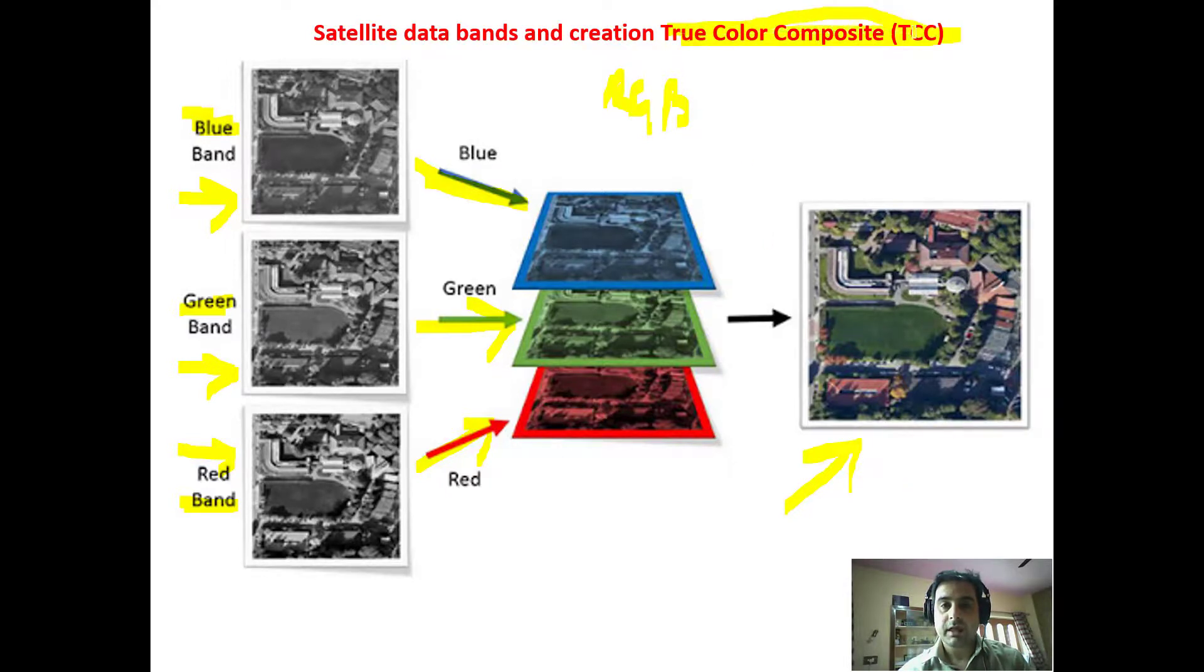Now depending on the requirements, you may choose for visual interpretation which band combination you would like to choose, or you would like to see things in true color composite or false color composites. So as already discussed in the previous lectures, we want vegetation to be seen in red color.